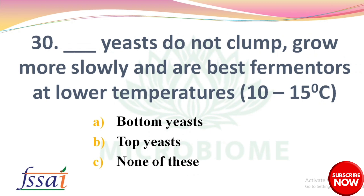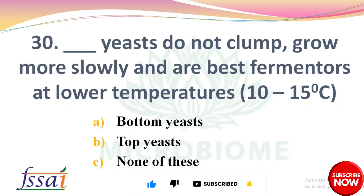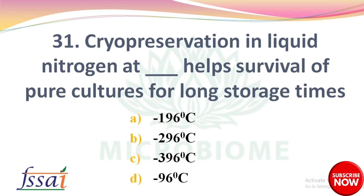Next: Dash yeast do not clump, grow more slowly, and are best fermenters at lower temperatures of 10 to 15 degrees Celsius — options: bottom yeast, top yeast, none of these. The right answer is option A, bottom yeast. Next: Cryopreservation in liquid nitrogen at dash helps survival of pure cultures for long storage times — options: minus 196°C, minus 296°C, minus 396°C, minus 96°C. The right answer is option A, minus 196 degrees Celsius.